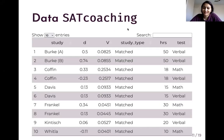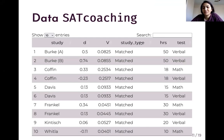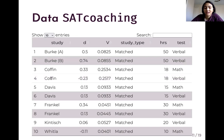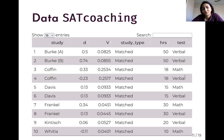The example data I'll use to demonstrate WildMeta is called SAT coaching, available in the clubSandwich package. It is a meta-analytic dataset examining the effect of SAT coaching on verbal and math SAT scores. It contains a study type variable indicating whether groups were matched, non-equivalent, or randomized; hours of coaching; and test type (verbal or math). It also contains effect sizes and associated variances, with each study potentially having multiple correlated effect sizes.